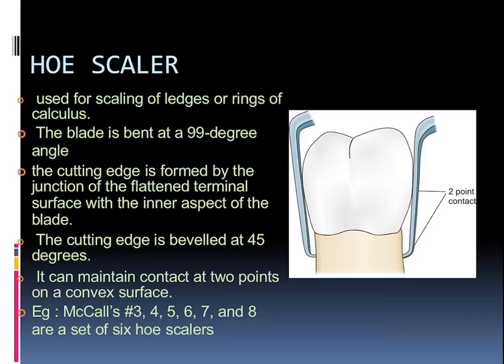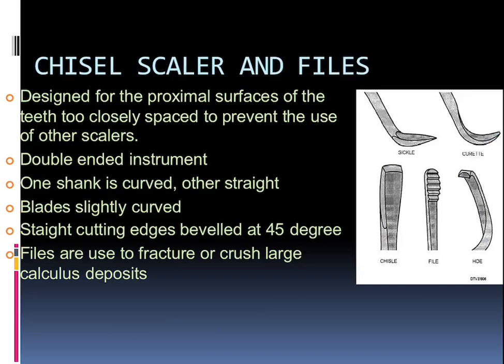Talking about the hoe scalers, which are used for scaling ledges or rings of calculus: the blade is bent at about 99 degrees here, as you can see, and the cutting edge is formed by the junction of the flattened terminal surface and the inner aspect of the blade; the cutting edge is beveled at about 45 degrees. It maintains two-point contact on a convex surface. Hoe scalers can be the chisel scalers and files. Chisel scalers are designed for the proximal surface of closely spaced teeth; they are double-ended, one shank is curved and the other is straight, with the straight cutting edges beveled at about 45 degrees. Files are used to fracture or crush larger calculus deposits.